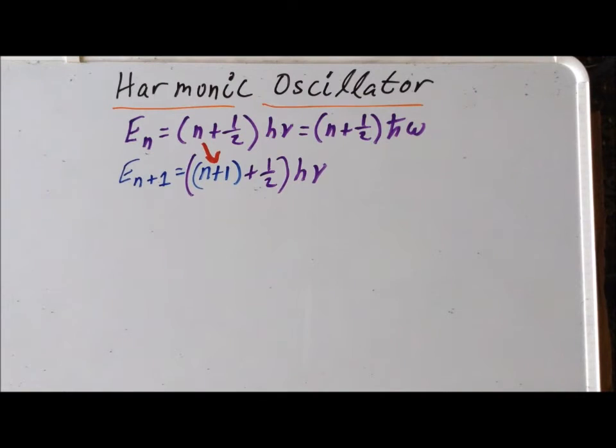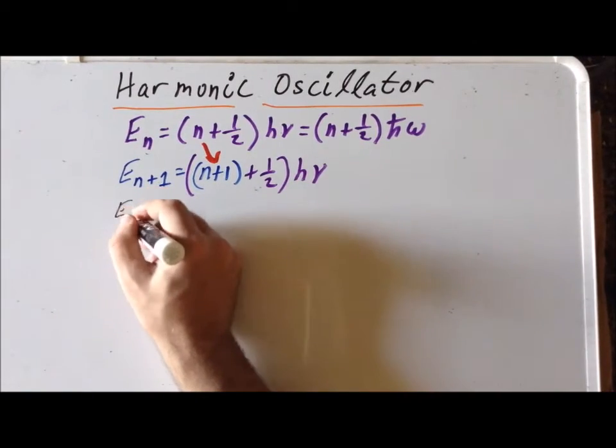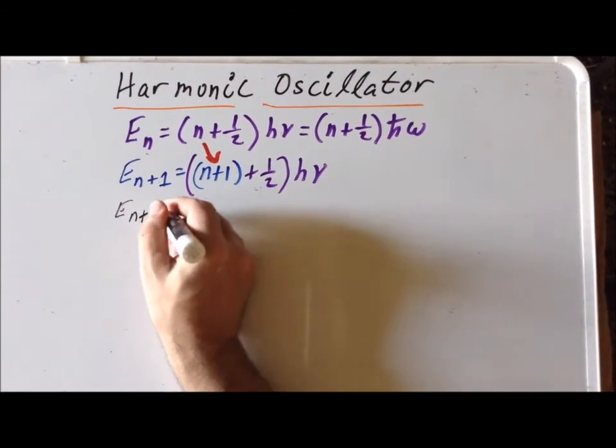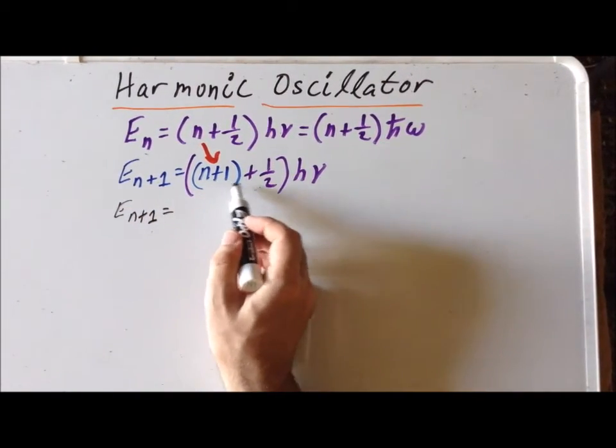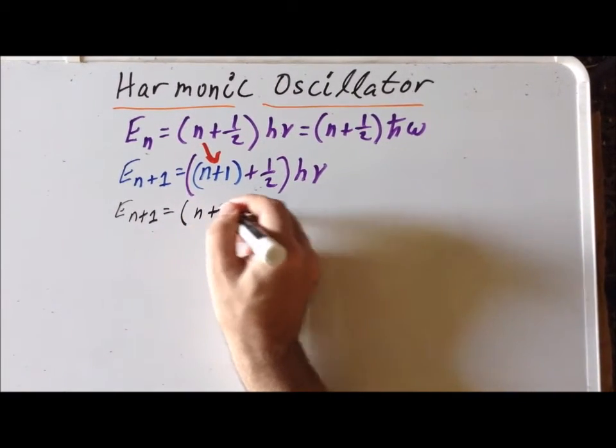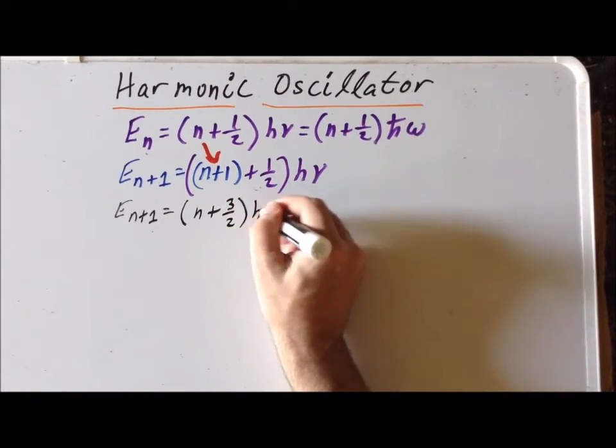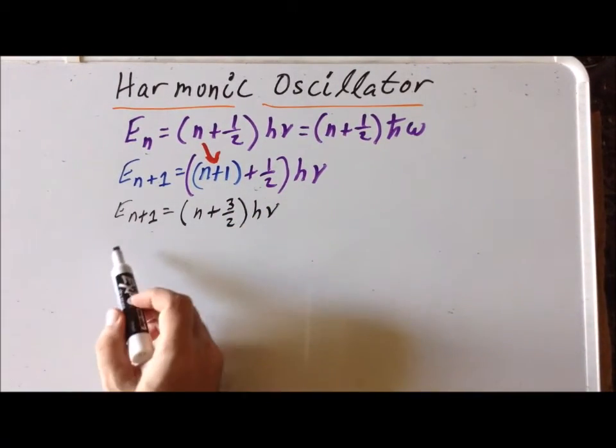Now we can simplify this expression somewhat. E the nth plus one by using the fact that one plus a half is three halves. So we have n plus three halves times h nu. So this is the energy for the nth plus one level.